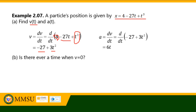For acceleration, we take the derivative of the velocity function. The derivative of -27 + 3t² is computed term by term: the derivative of the constant -27 is zero, and the derivative of 3t² is 6t. Therefore, the acceleration of the particle as a function of time is a = 6t.